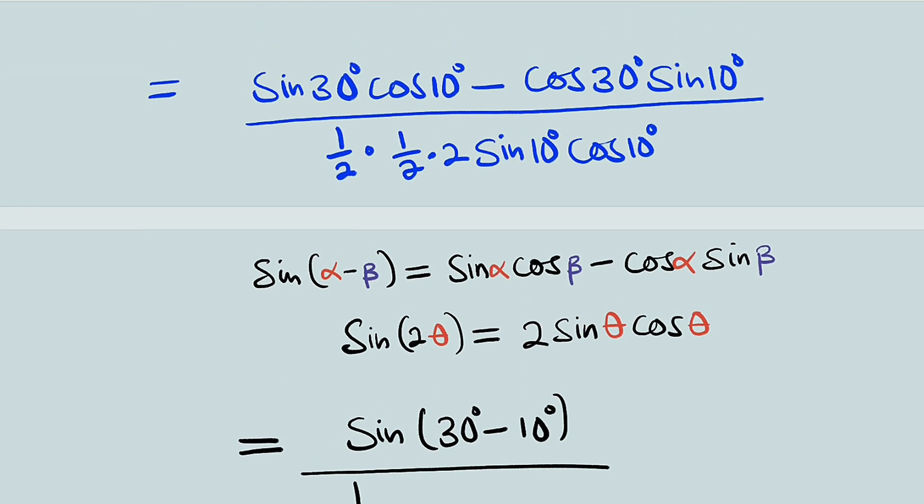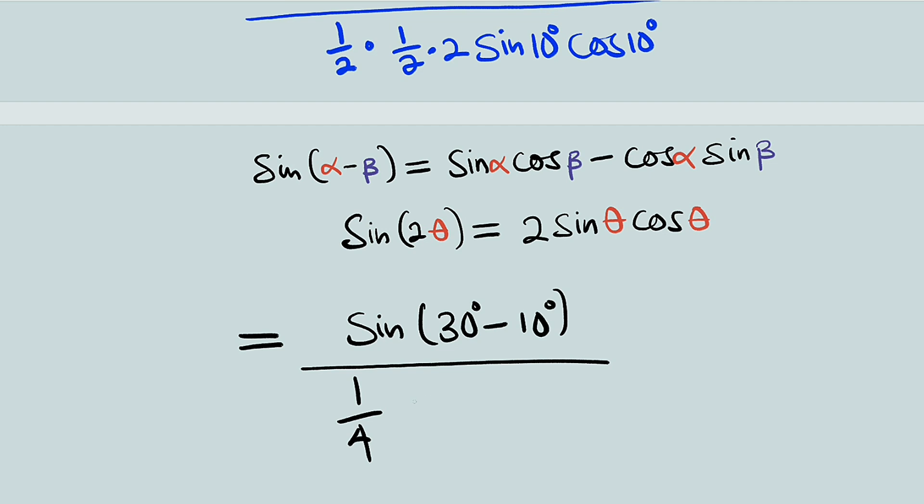Look at this identity. We have 2 sine of 10 cosine of 10. It exactly corresponds to this identity, which we can write instead of 2 sine of 10 cosine of 10 as sine 2 multiplied by 10, which is sine 2 theta. So we have sine of theta. Theta is 10.